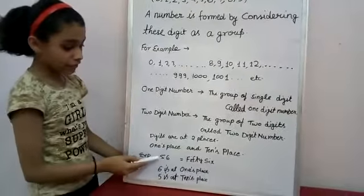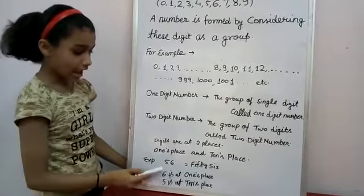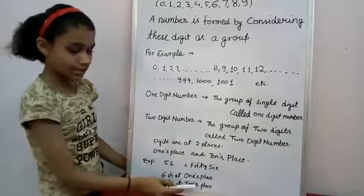For example, 56. In 56, 6 is at 1's place and 5 is at 10's place.